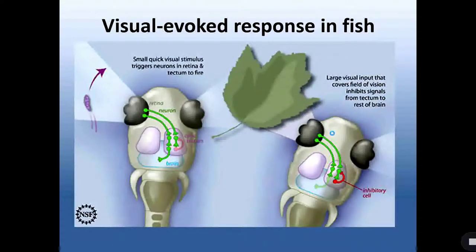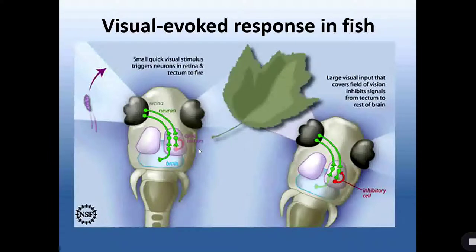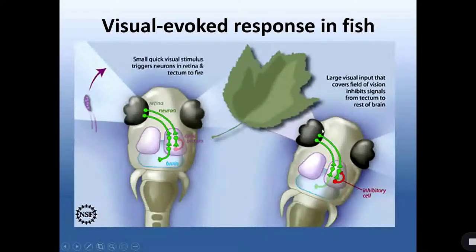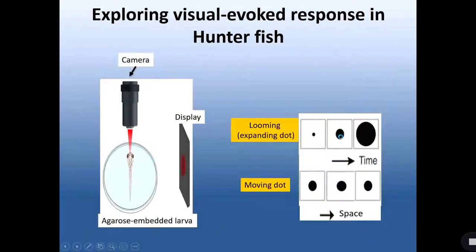We next decided to focus on the visual system. According to the type of stimulus, zebrafish respond in different ways. When fish are exposed to a small quick stimulus, this triggers neurons in the retina and in the brain to fire. When fish are exposed to a large object which covers the field of vision, this produces a kind of switch-off response in the brain. We used a very sophisticated but powerful system to analyze the visual response in our fish model with different stimuli.